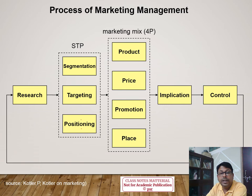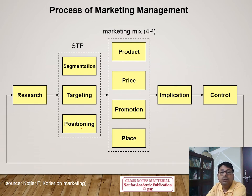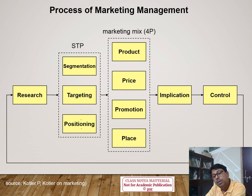Once segmentation, targeting, and positioning are fixed, the company identifies which product to develop — for example, a European tour or a Buddhist circuit for inbound operators. They then determine prices, plan promotion, and select distribution channels. When the product is ready, it goes to market, clients book, it is implemented, and feedback is collected, giving the company full control over the process.